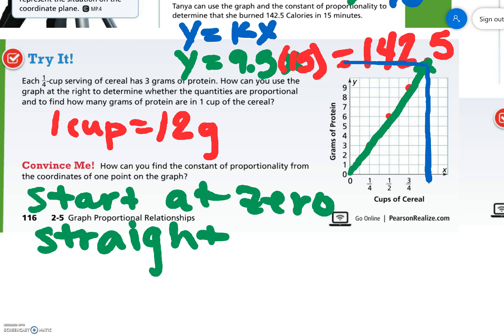So if you just want to look at one point, you could look at the x value of one. Remember, it all relates back to that unit rate. So the constant of proportionality here is 12.